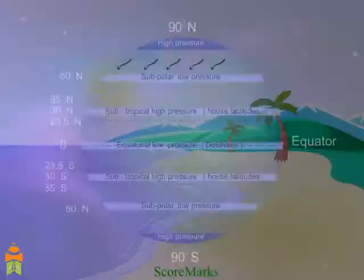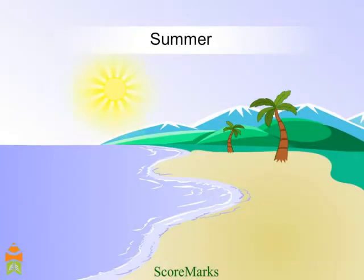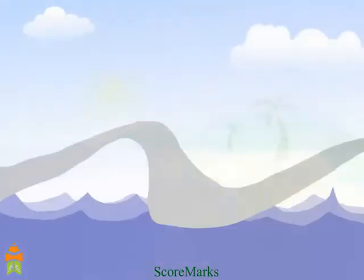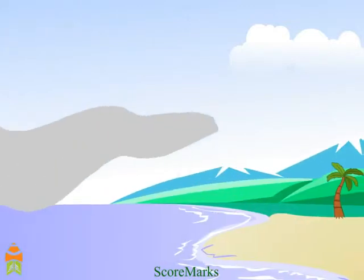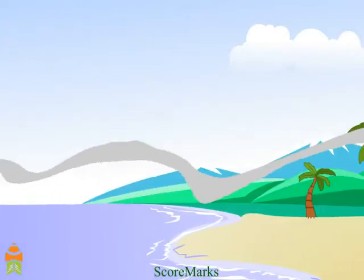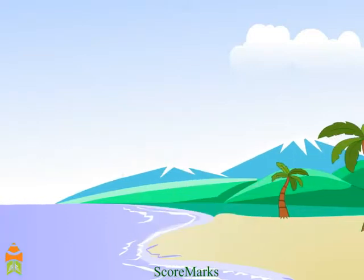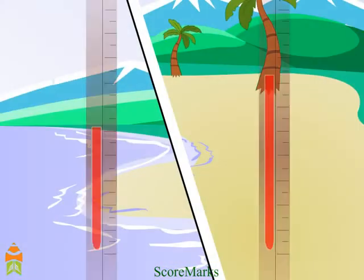During summer, land near the equator warms up faster and the temperature of the land is high. The air over the land gets heated and rises. This causes the wind to flow from oceans to the land. These are called monsoon winds.